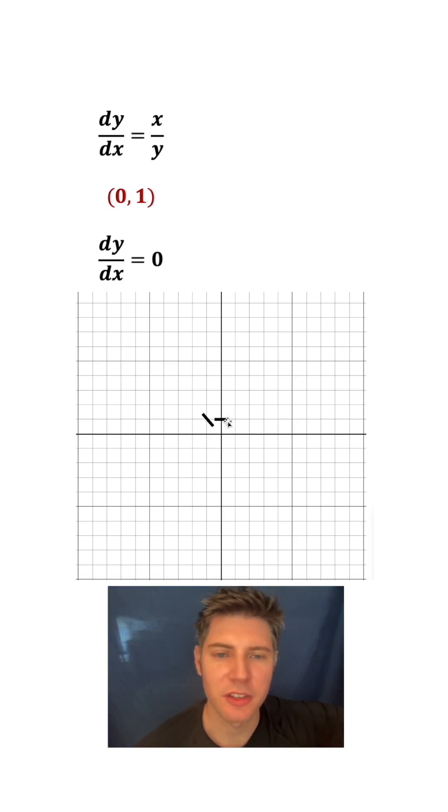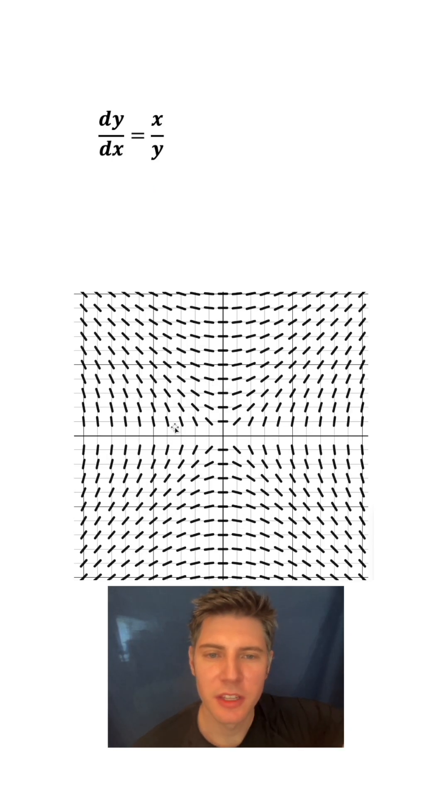So now to graph this, we can do this for every single one of these points, and we end up with a slope field that shows the slope at each of these points. Here's the first one we did, and here's the second one that we did.